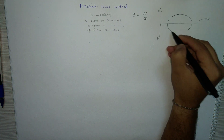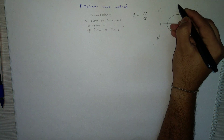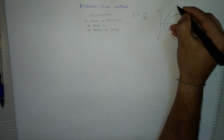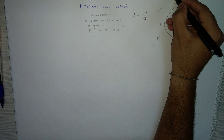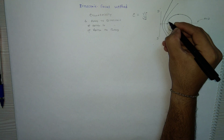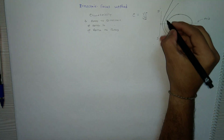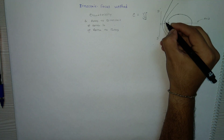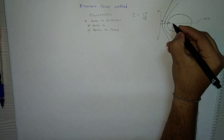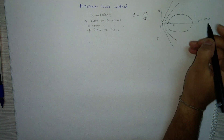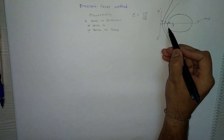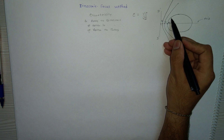If you plot an ellipse, parabola, or hyperbola on this directrix and axis combination, you get different figures. This point is the vertex for the ellipse, this point is the vertex for the parabola, and this point is the vertex for the hyperbola. There is one common focus for all these curves.